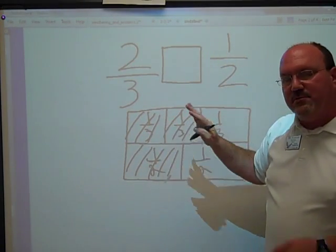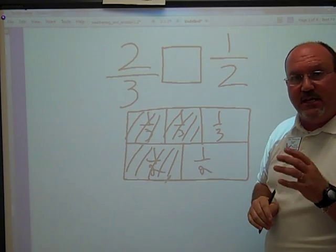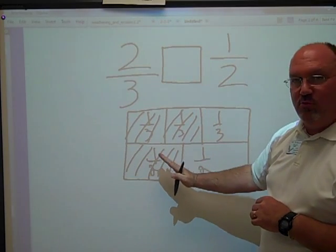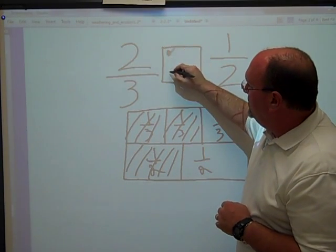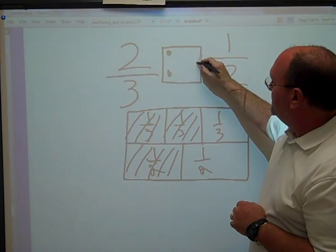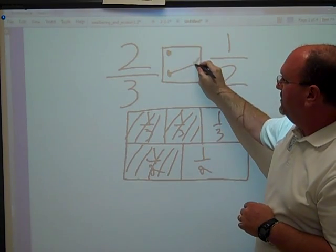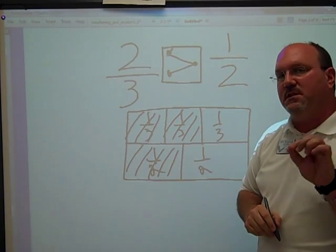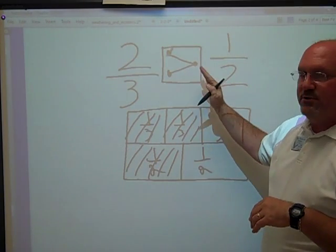Now if my drawing is pretty accurate, I should be able to see pretty easily that 2 thirds is actually bigger than 1 half. So the bigger side gets 2 dots, the smaller side gets 1 dot, and all I have to do is connect the dots and I have an inequality, a number sentence that says 2 thirds is greater than 1 half.